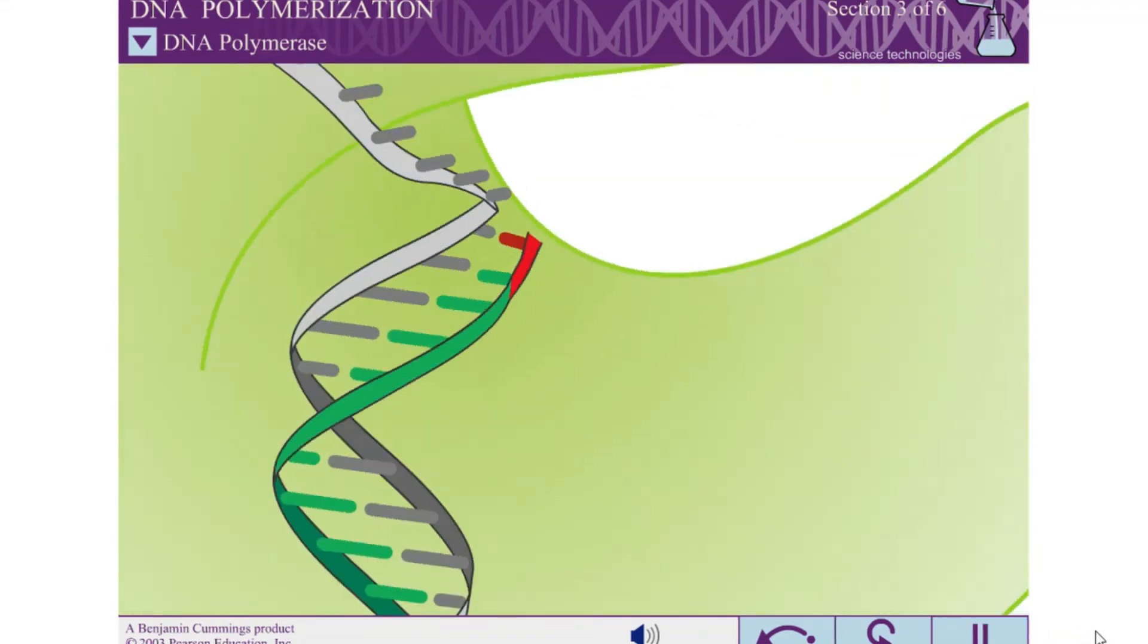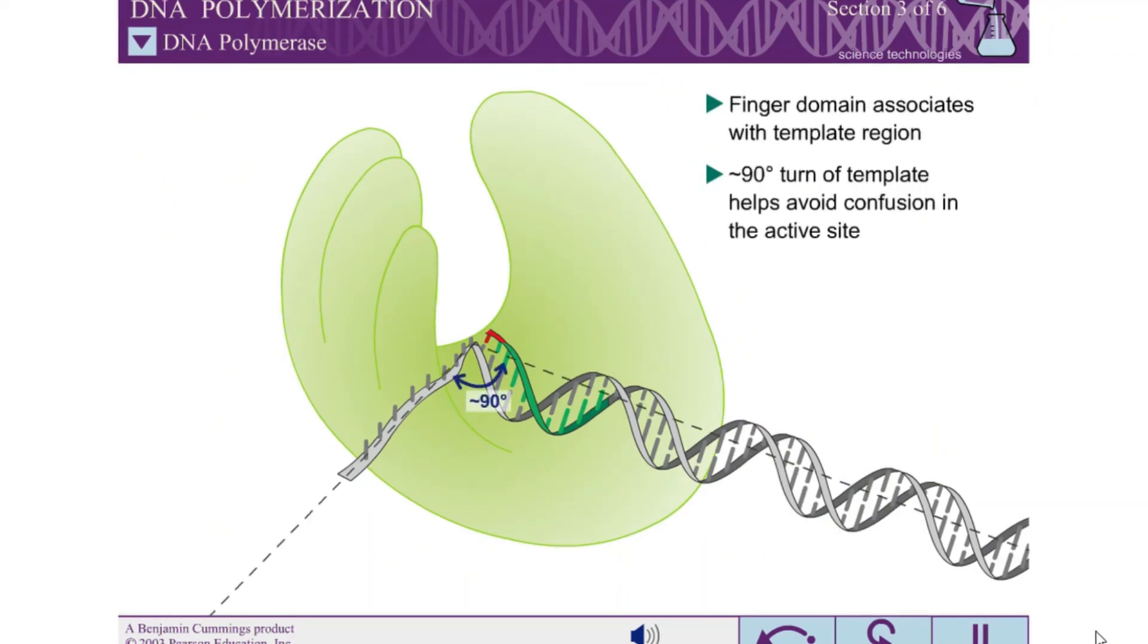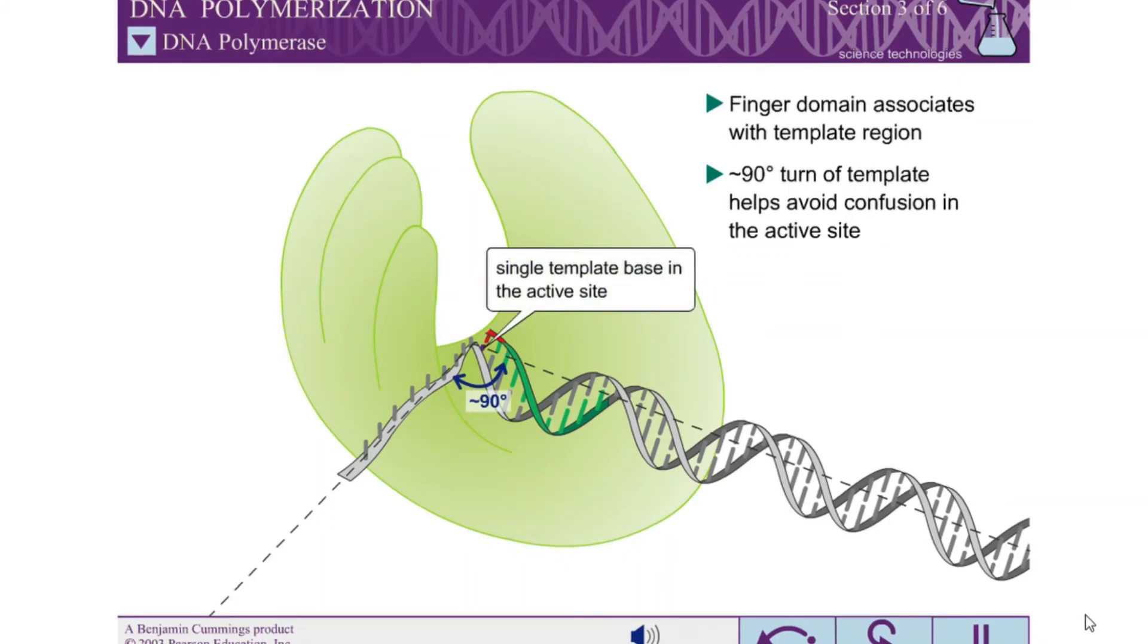The finger domain also plays a second role. The finger domain associates with the template region, leading to a nearly 90 degree turn of the phosphodiester backbone of the template immediately after the active site. This conformation of the template leaves only a single template base in the active site, preventing any confusion as to which base is ready to pair with the next nucleotide to be added.